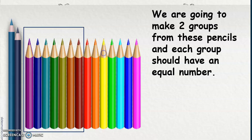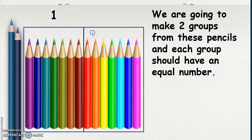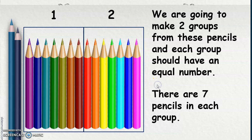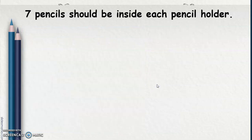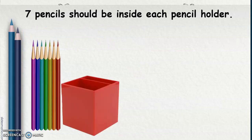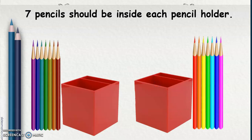So let's start. The first group has 1, 2, 3, 4, 5, 6, 7 — 7 pencils. And the second group: 1, 2, 3, 4, 5, 6, 7. There are 7 pencils in each group. So 7 pencils should be inside each pencil holder — 7 for here and 7 for here as well. 14 divided by 2 equals 7.